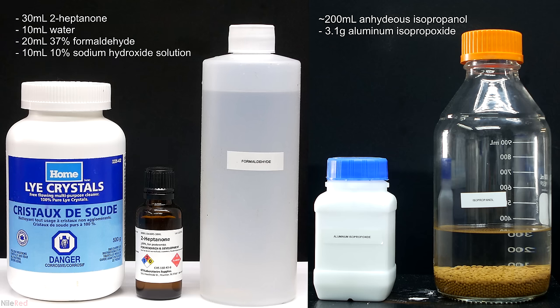Here are the chemicals that I used for both of the reactions. On the left we have the chemicals for the aldol reaction and condensation, and on the right we have the ones for the MPV reduction. For the aldol stuff, I used formaldehyde and 2-heptanone, and both were purchased online. I was able to get the formaldehyde for pretty cheap, but the 2-heptanone cost me a ridiculous $70.